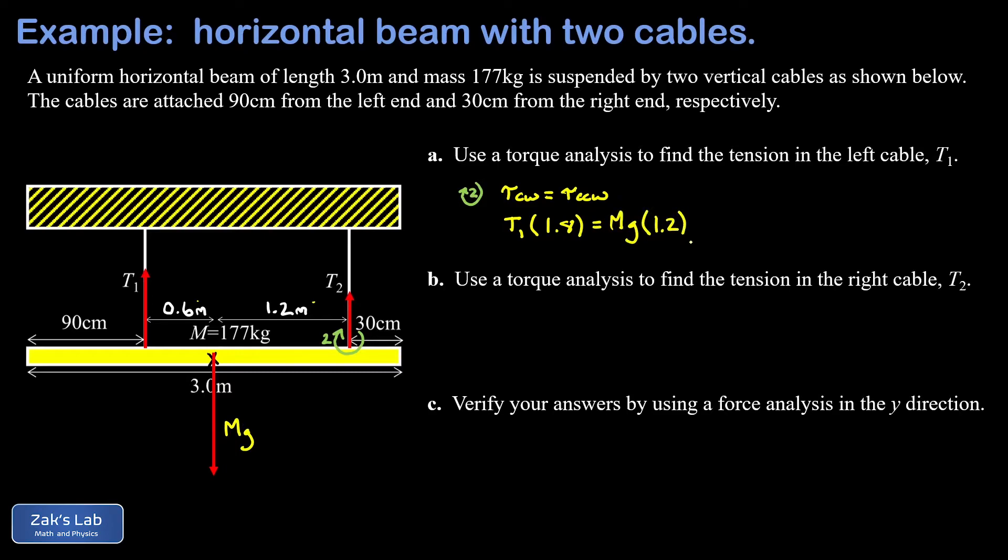We can throw in numbers for m and g, that's 177 kilograms times 9.8 meters per second squared times 1.2. All I have to do is divide by 1.8 to solve for T1, and when I run the numbers on this I get about 1156 newtons.